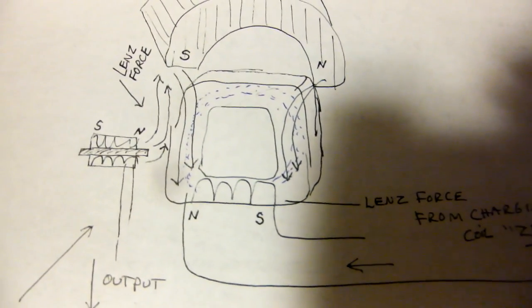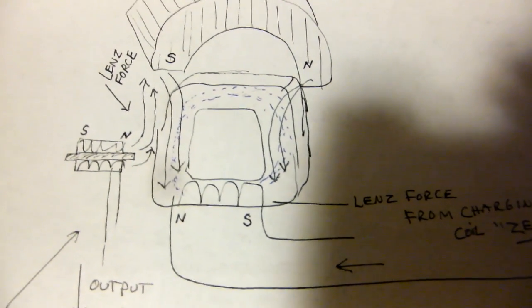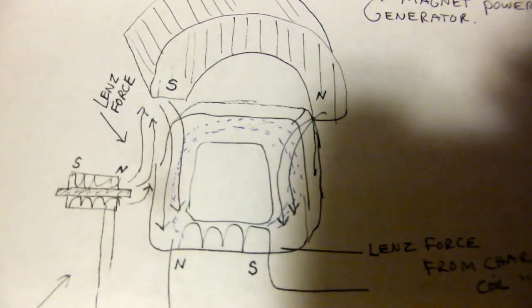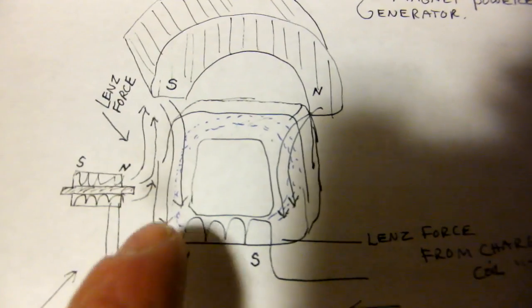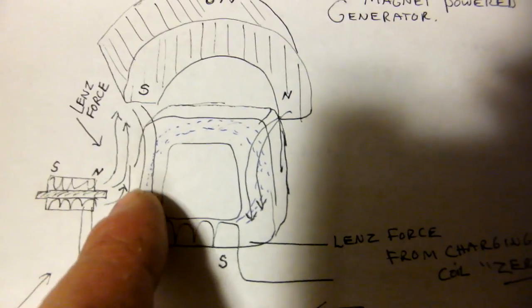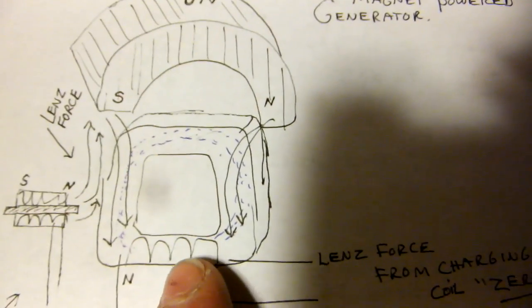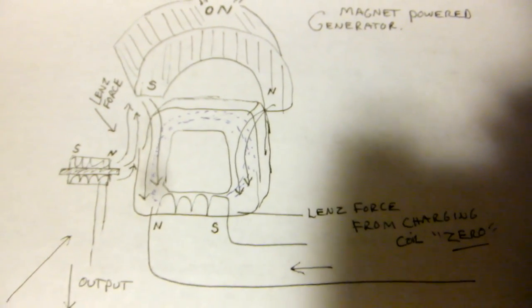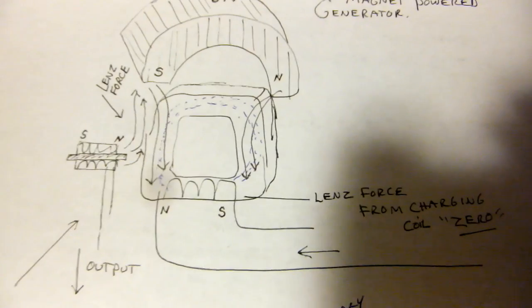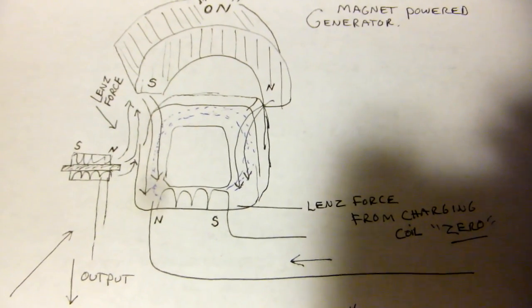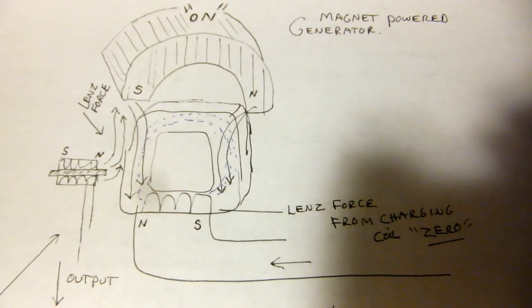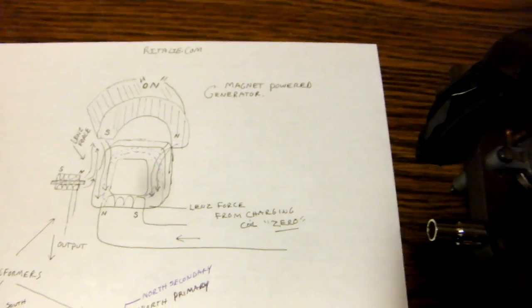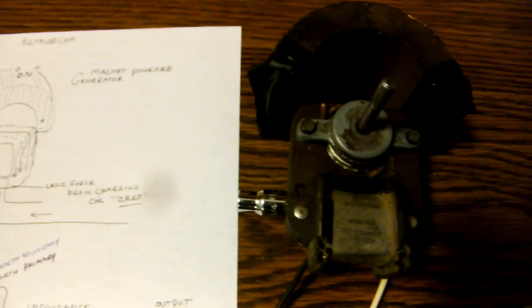Lenz's law is still here—it's not gone—but you see, the Lenz force is going this way, away from the primary coil, thereby negating the effect of Lenz's law and violating the law of conservation of energy and all that jazz, the stuff they say you can't do. But I believe it can be done and I'm just trying to inspire others. This is my experiment. It's very crude, but this is all I've got so far.